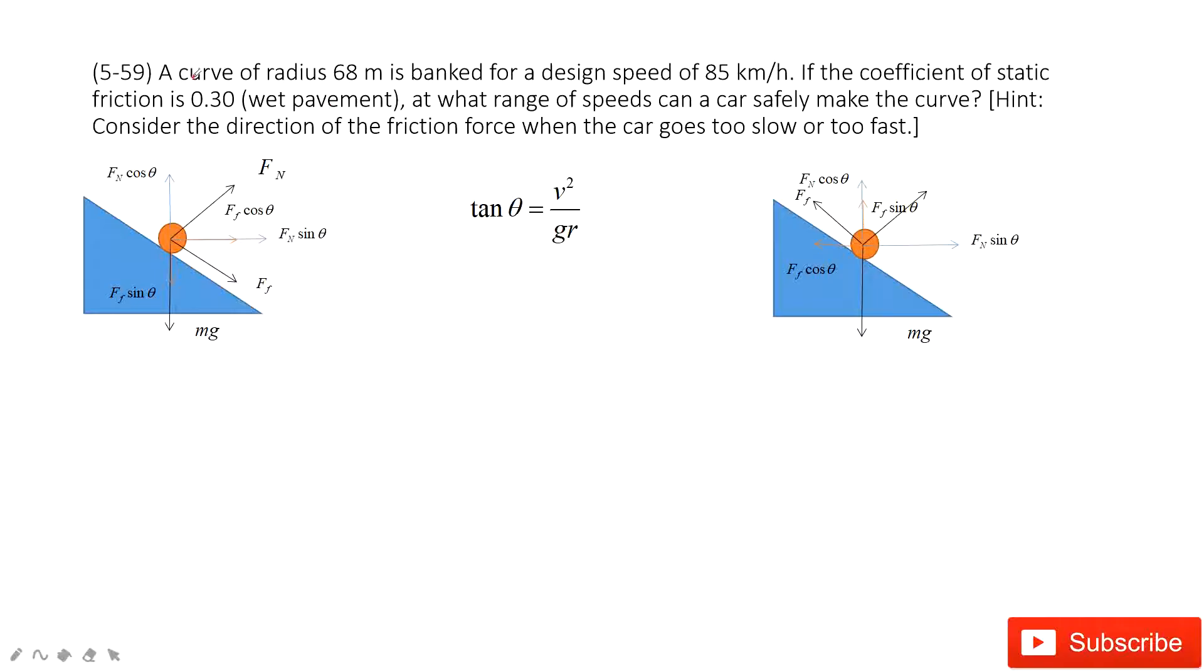The first sentence tells you the curve radius. The radius is banked for design speed. So what is the banked design? That means the car can make a perfect circle without considering the friction.